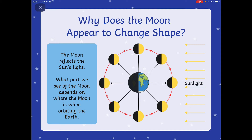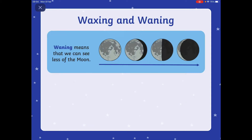So why does the moon appear to change shape? Well, the moon reflects the sun's light. What part we see of the moon depends on where the moon is when it's orbiting the earth.